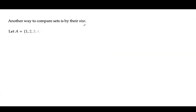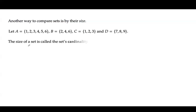Another way to compare sets is by their size. Suppose set A includes 1, 2, 3, 4, 5, and 6. Set B includes 2, 4, and 6. You have another set C which has 1, 2, 3, and set D which includes 7, 8, and 9. The size of the set is called the cardinality of that set. The size of the first set is 6 because you have 6 distinct numbers: 1, 2, 3, 4, 5, 6.